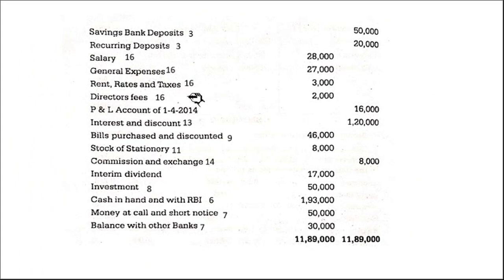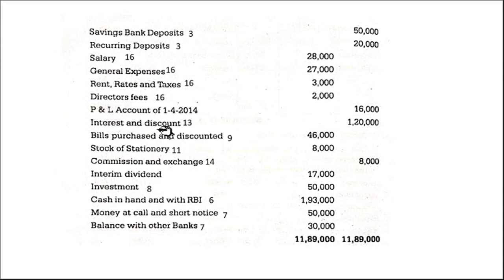Director's fees — see, all these are operating expenses, Schedule 16. Then profit and loss account opening balance — that is last year's profit. Where does it appear? In the profit and loss account. So no schedule, but it comes in the profit and loss account. Interest and discount — this is interest earned, Schedule 13.